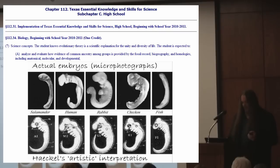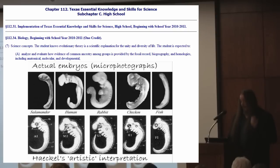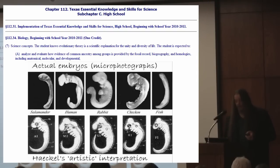Haeckel drew hundreds of embryos fairly accurately, but there were some he enhanced to exaggerate certain traits or drew from imagination with no visual references. In science, this is equivalent to fraud. However close he got it doesn't matter — the explanation was still wrong. Recapitulation has been refuted long ago and recently replaced by a more accurate study of the parallels of embryological and evolutionary development, colloquially known as evo-devo.